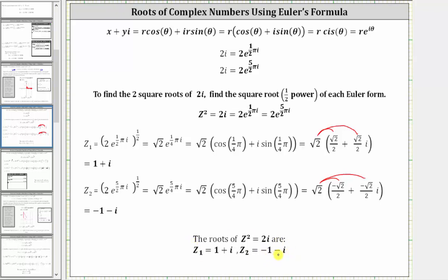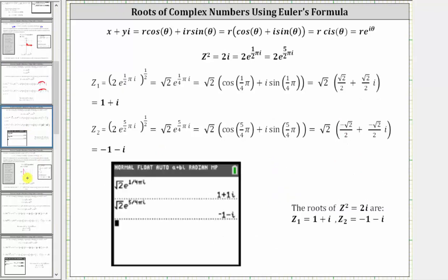Now we have our two roots or two complex solutions: one plus i and negative one minus i. Notice that for these complex numbers, both x and y are real, which means we could also evaluate this on a graphing calculator. On the graphing calculator, we can enter the exponential form of the two roots to get the two roots in the form x plus yi.